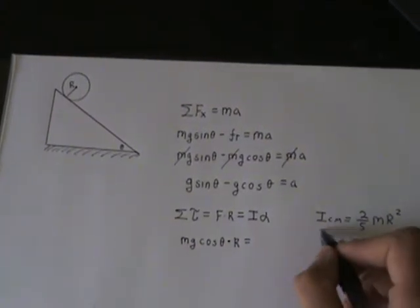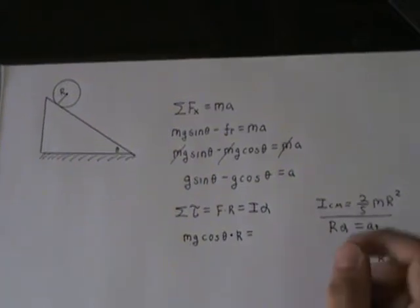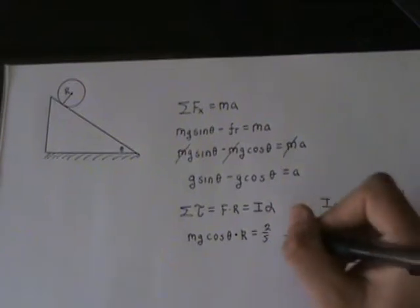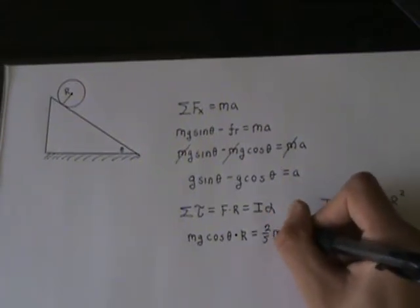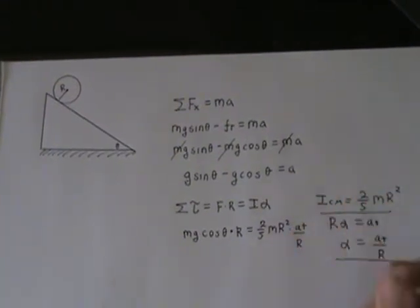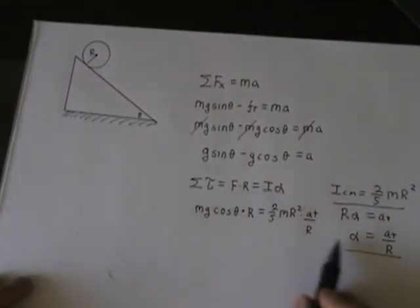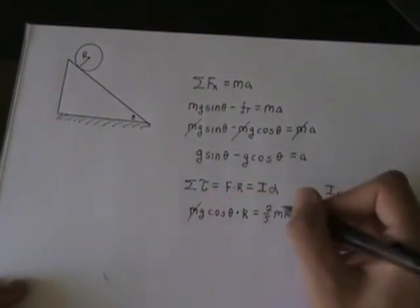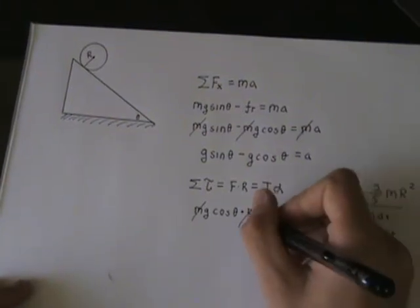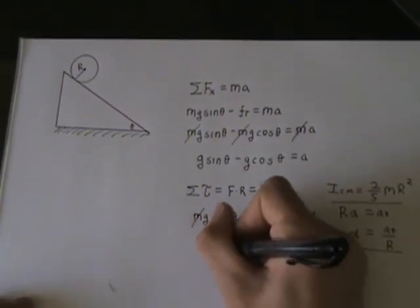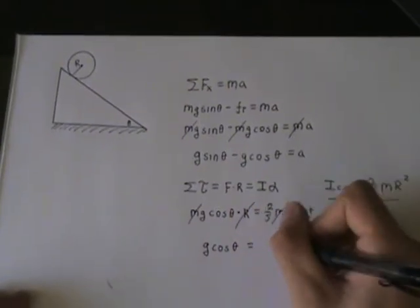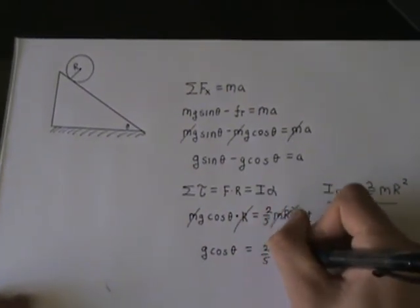Let's plug I and alpha into this equation. When we plug in I, it would be 2 fifths mass times radius squared times a tangential over radius. From this equation, there's a lot of things we can cancel out. The m's go away and the radiuses go away. Now we're left with g cosine theta is equal to 2 fifths a tangential.